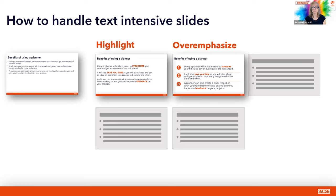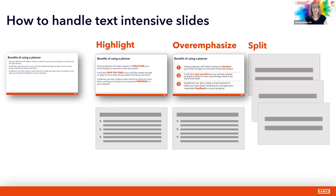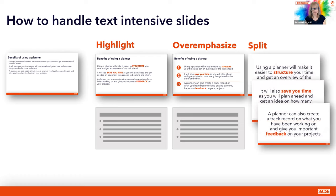The third strategy is to split. Take those big long sentences — if you cannot remove any text, split it up on different slides. Again, slides are free. Take one long sentence and put it on one slide each, then add contrast and highlight. You can get away with having a long full sentence on a slide providing it's just one sentence, just like a long quote. Splitting your content across multiple slides can definitely be a good strategy for text-intensive slides.